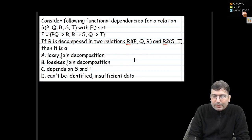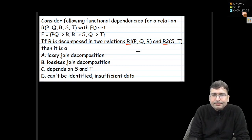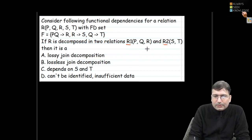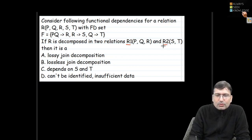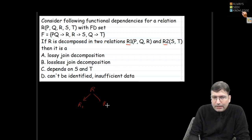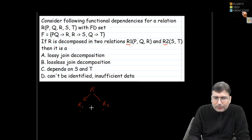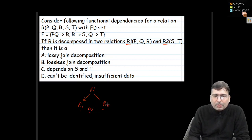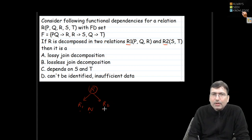As you are already aware, when decomposing a relation into two different relations, the first thing we need to do is find the common attribute. If we have a relation R decomposed into R1 and R2 with no attribute common in R1 and R2, we cannot perform a join operation on them, and it will be impossible to recover the original R.